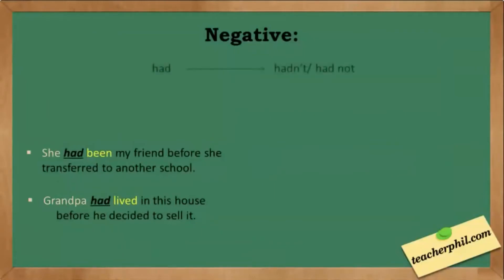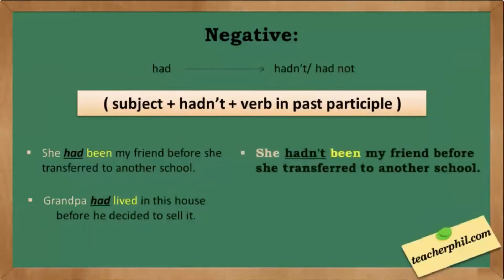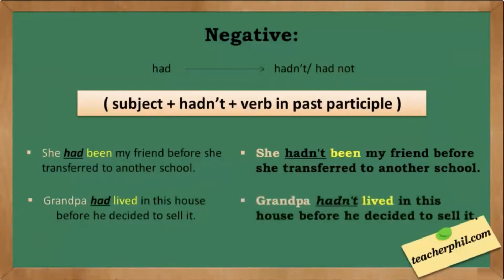Making a negative sentence is just simple. We only change 'had' into 'hadn't' or 'had not.' So the pattern will be: subject plus 'hadn't' plus verb in the past participle. Examples: 'She hadn't been my friend before she transferred to another school.' 'Grandpa hadn't lived in this house before he decided to sell it.'